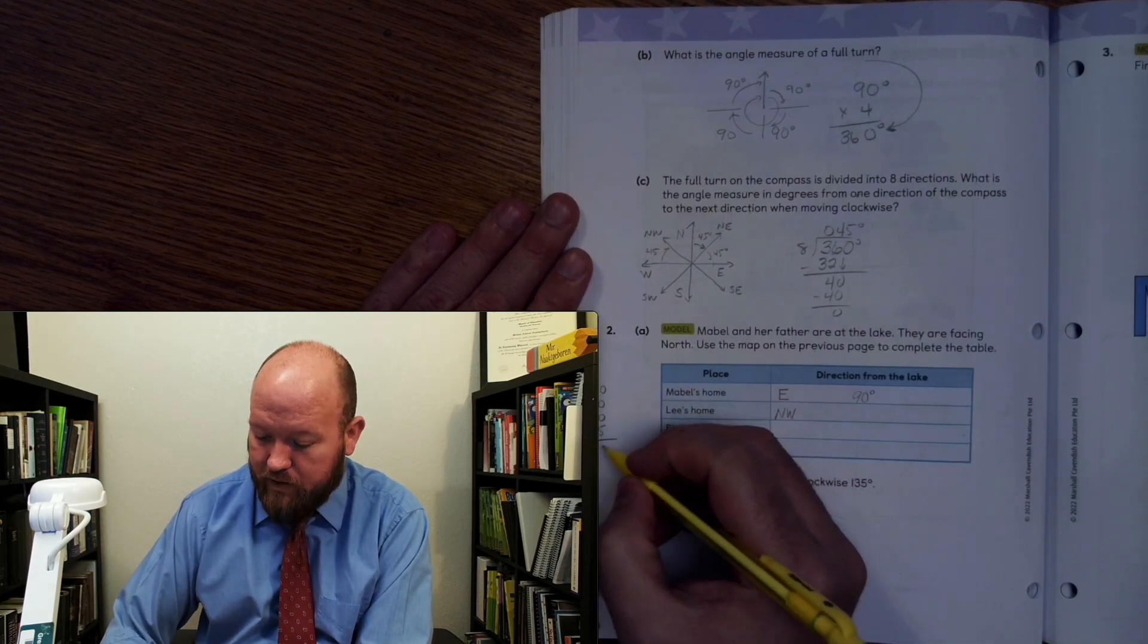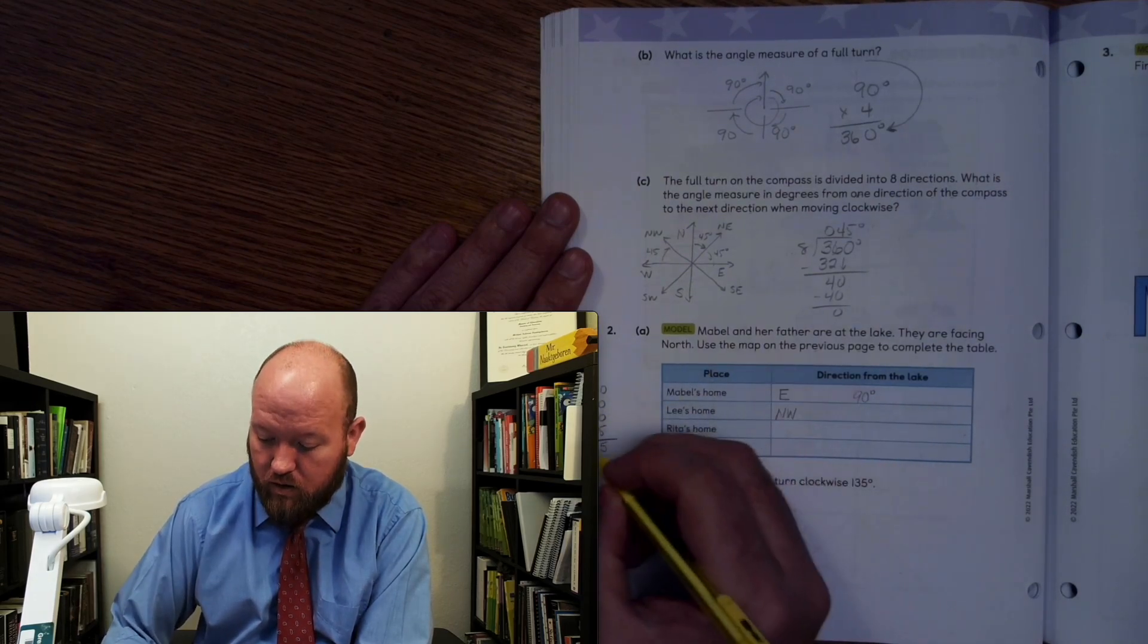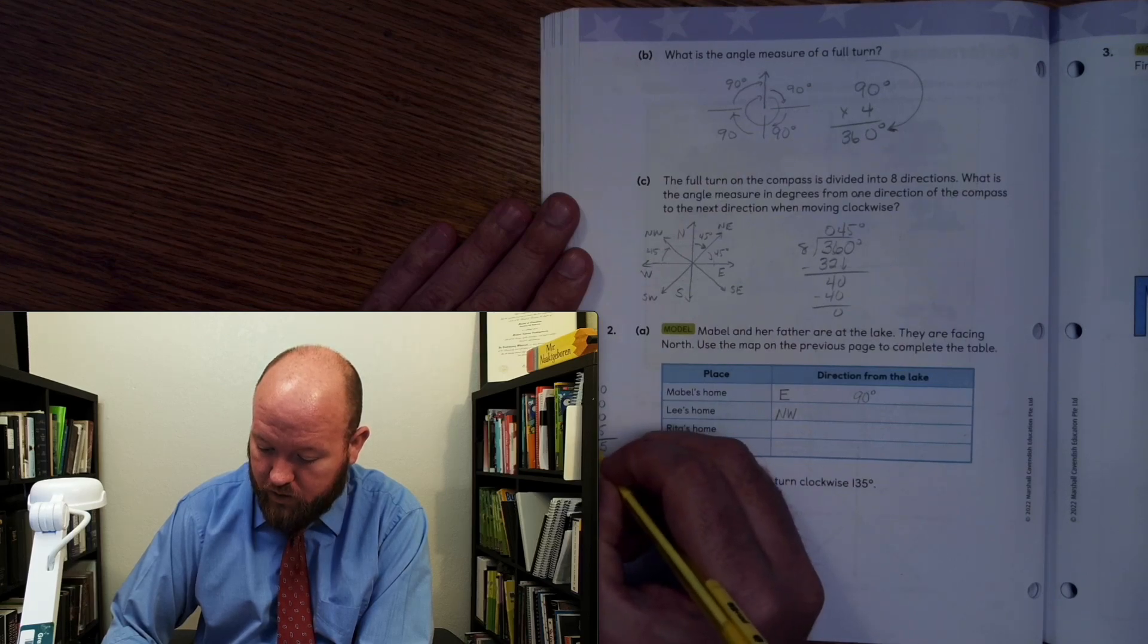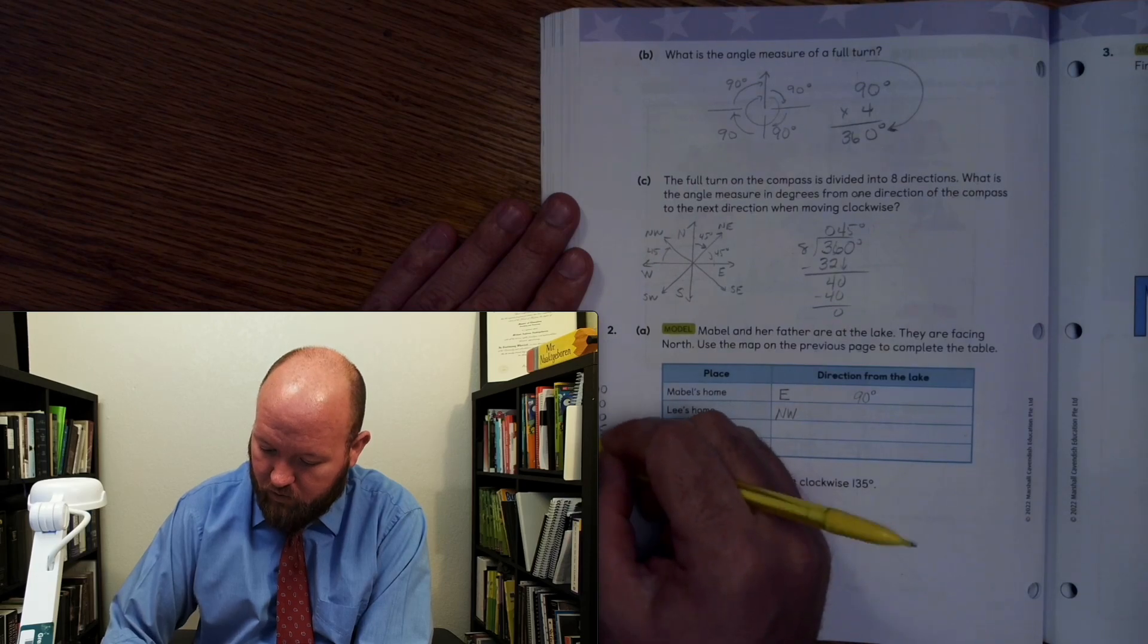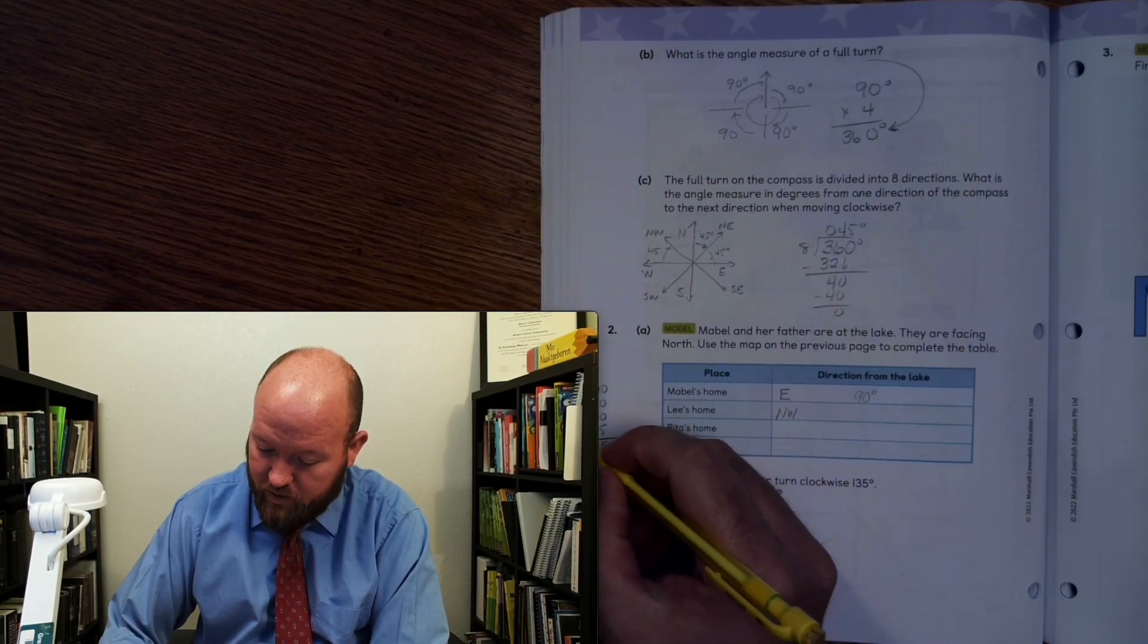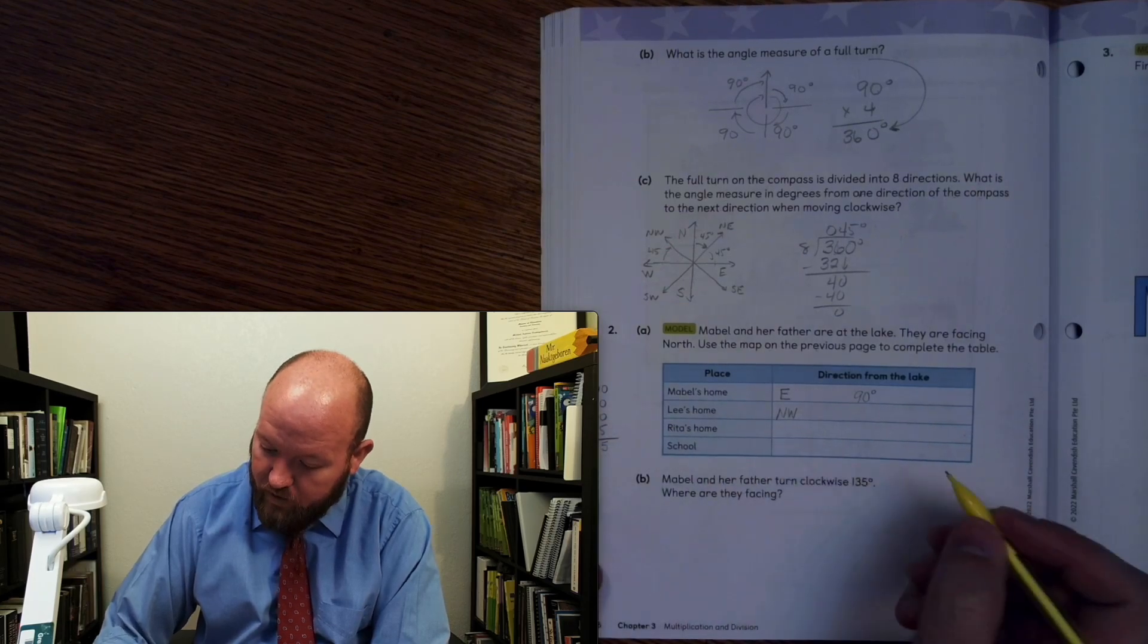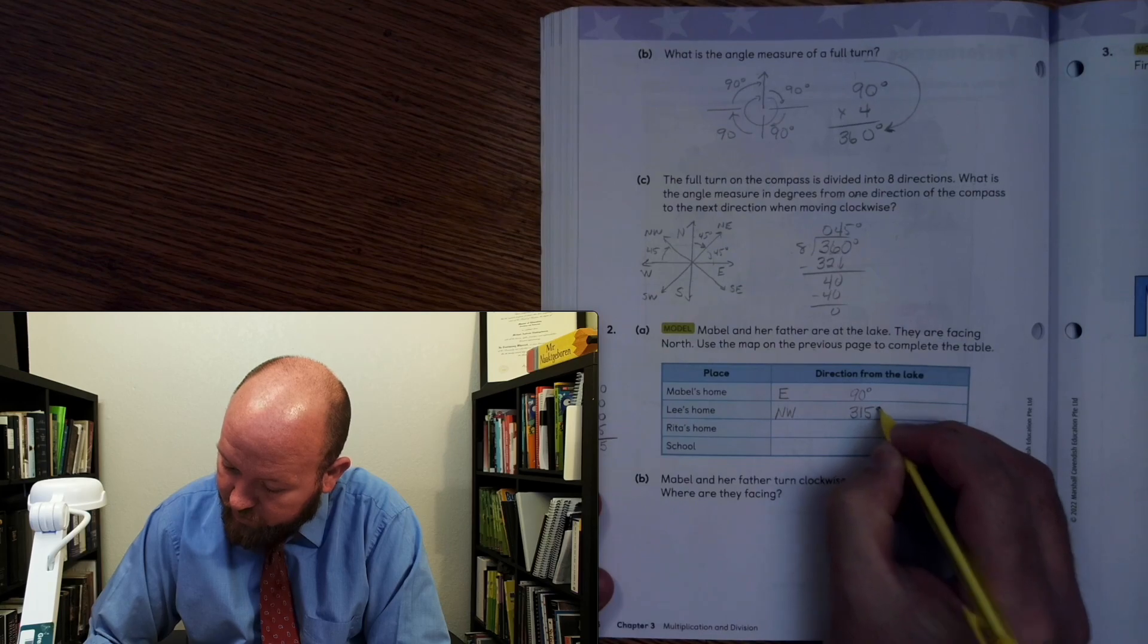So you're going to have to go 90 plus 90 plus 90 plus 45. Three zeros plus five is five. Nine times three is what? 27 plus four? 31. That's right. 27 plus four is 31. There we go. So you'd have to go 315 degrees.